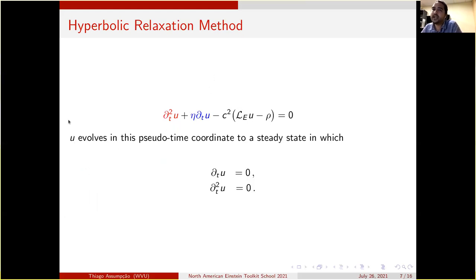We evolve u in this pseudo-time coordinate to a steady state in which both the first and second time derivatives vanish. And when that happens, we end up with a solution to the original elliptic equation.